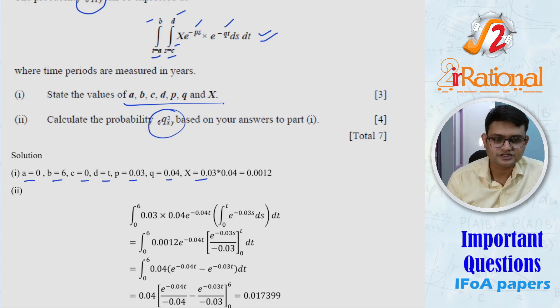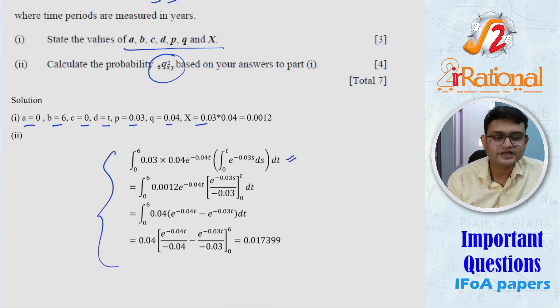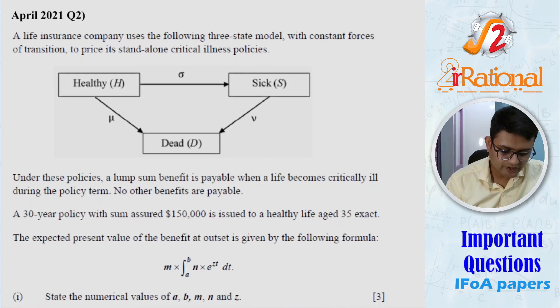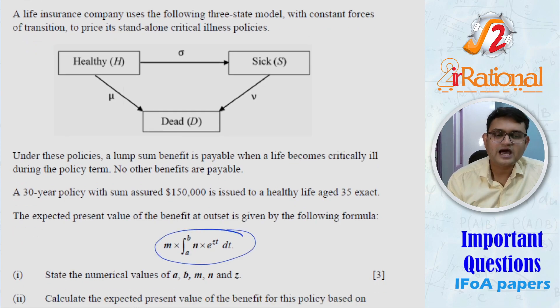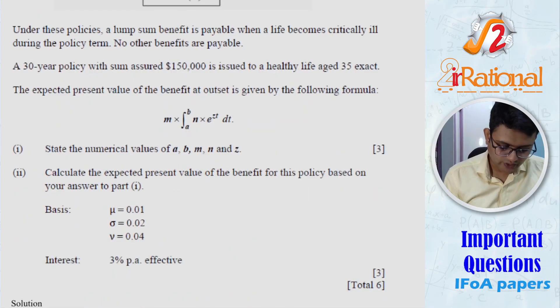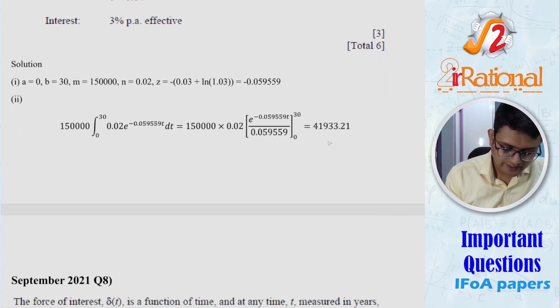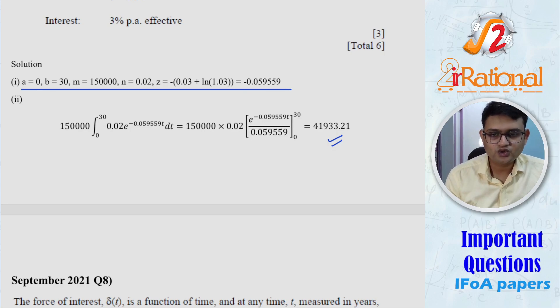we had to solve them because they said, calculate this probability based on your answer. So we had to solve this anyways and show the working as well. You'll find that in a paper, one or two questions might actually be in this format where you just have to write the values, nothing else. So those questions you might find from joint life and reversionary annuity chapters as well as in April 2021. You will find similar question was asked in transition state model question. And you had to calculate the expected present value of the benefit for this policy. So you had to solve it as well. But in part one, you had to just show what is A, B, M, N, Z. That's it.